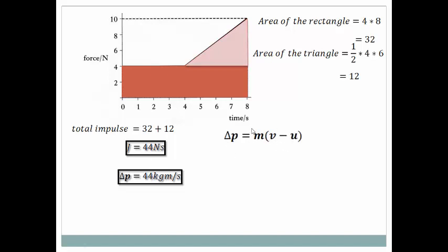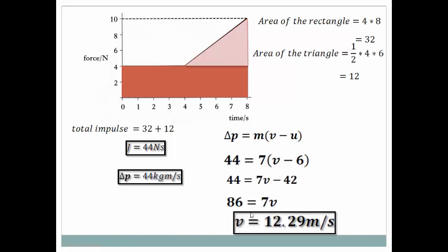And to find the final velocity, we can use the expression for change in momentum Δp = m(v - u). With the values: change in momentum 44, mass 7, initial velocity 6, open the bracket, rearrange, simplify, we get speed as 12.29 meter per second.